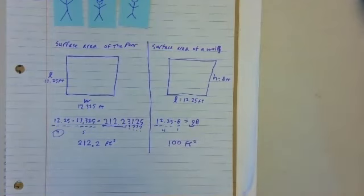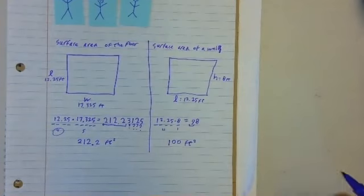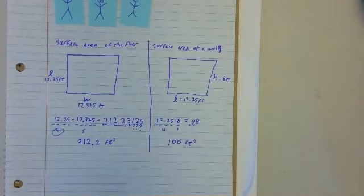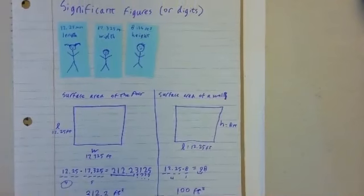So that's how it works with significant figures when you need to adjust your answer at the end by rounding to the correct significant figures. Thanks for watching today.